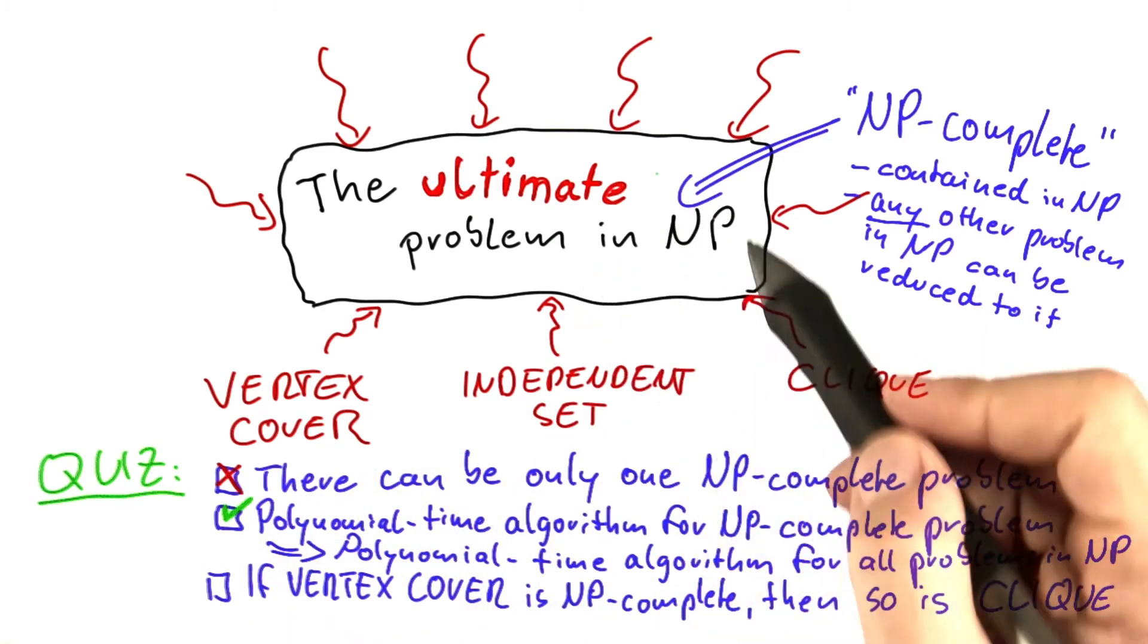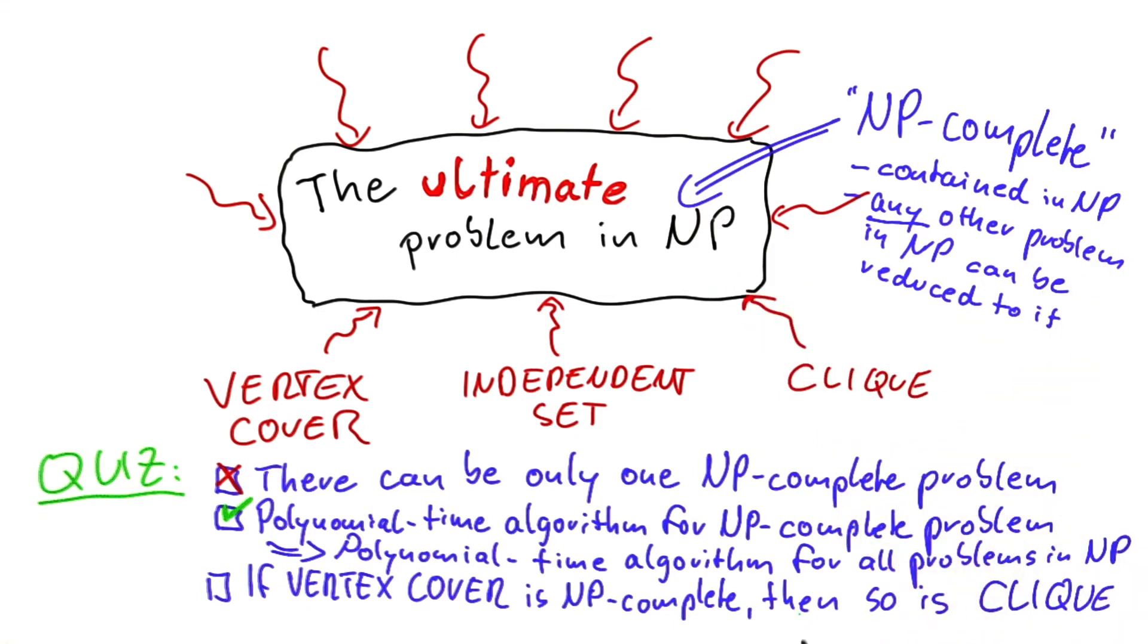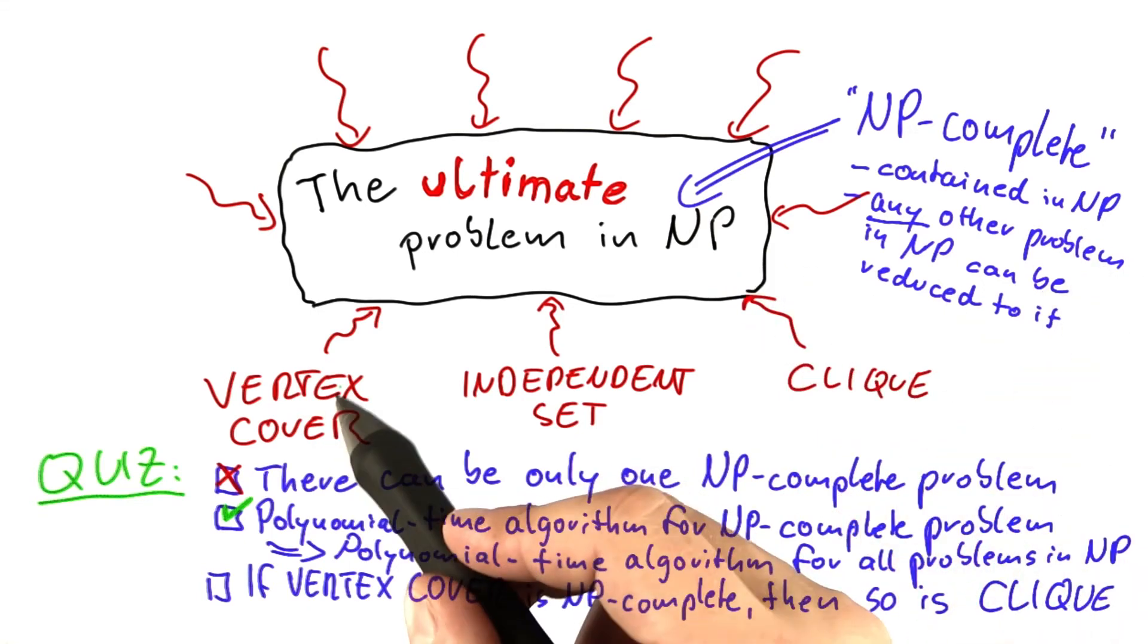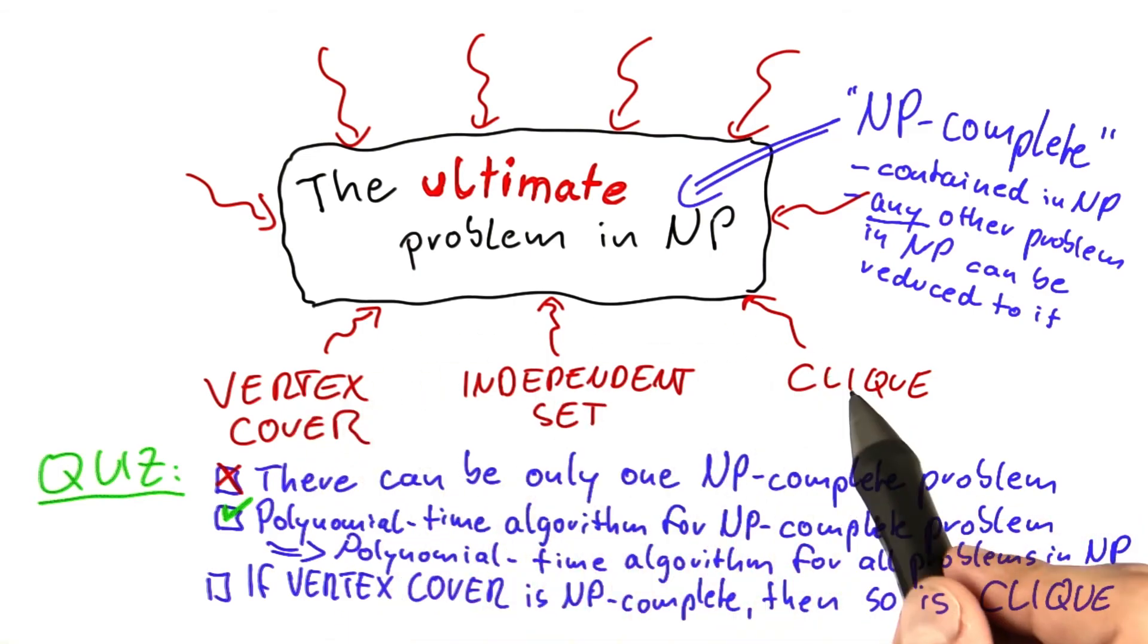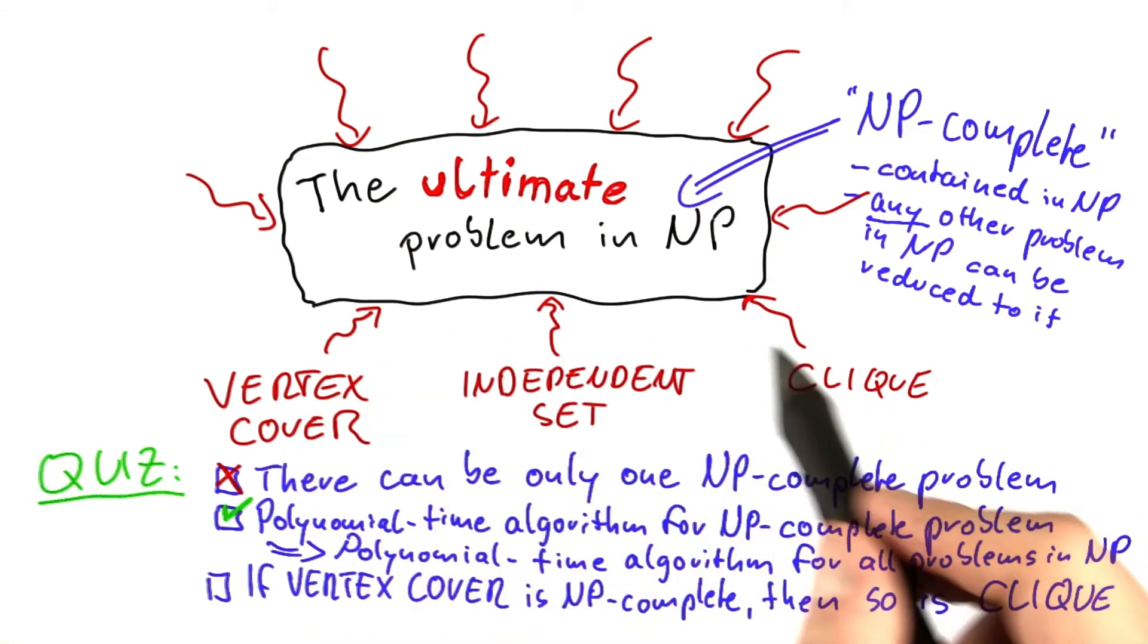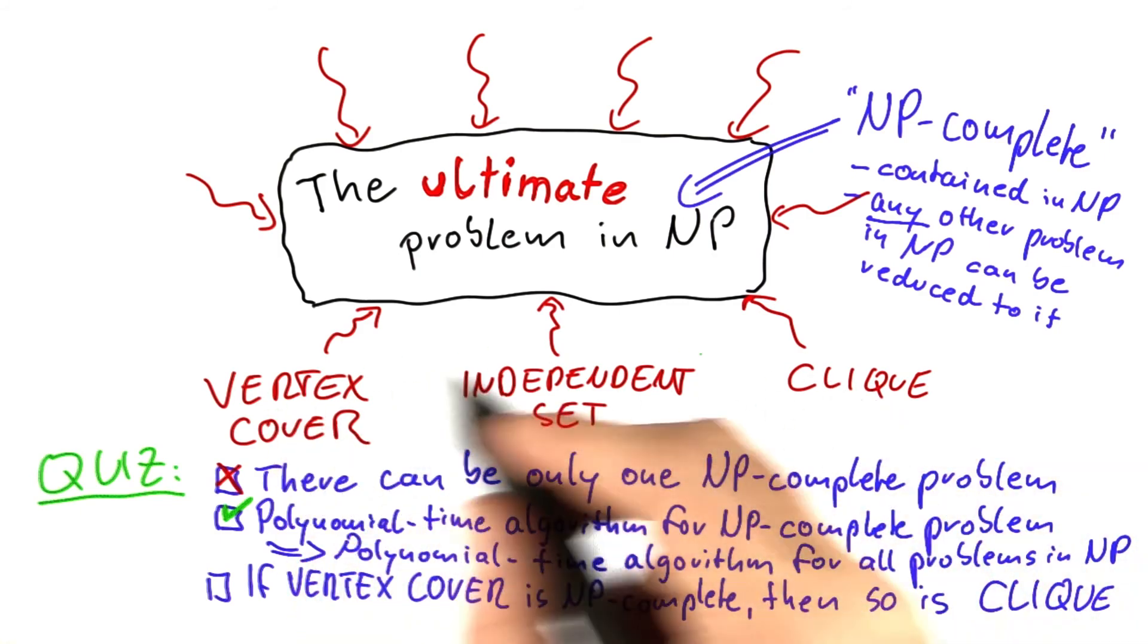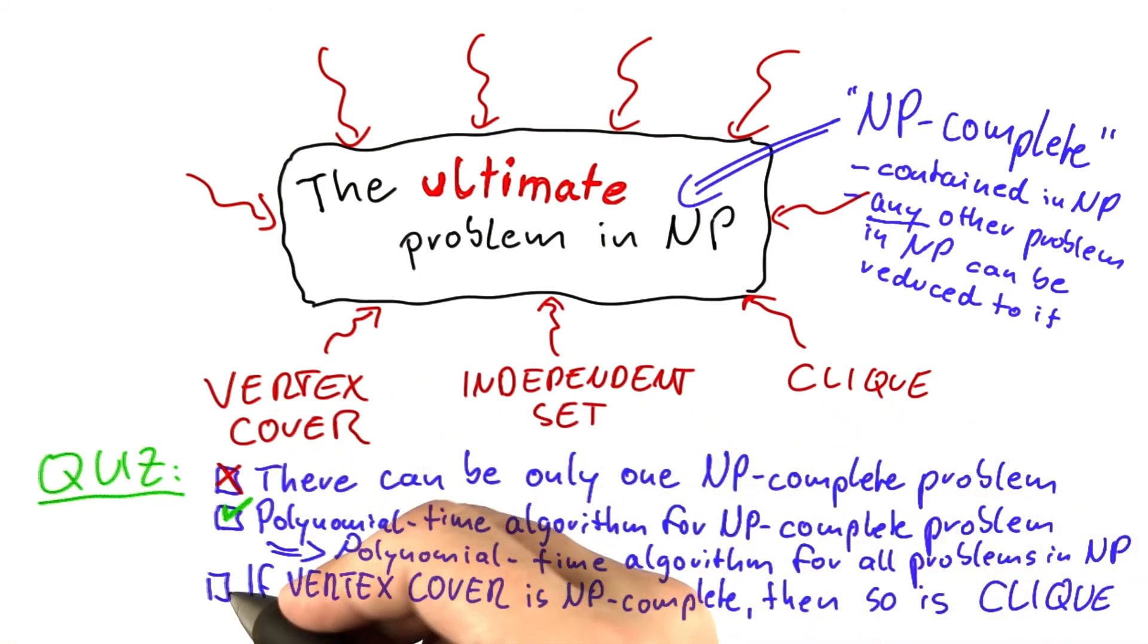And finally, if vertex cover would be an NP-complete problem, then clique would be an NP-complete problem as well, because we have shown that you can use polynomial time reductions to get from vertex cover to clique and vice versa. So from a perspective of polynomial time versus exponential time hardness, those two problems are basically equally hard to solve. So this one here is also true.